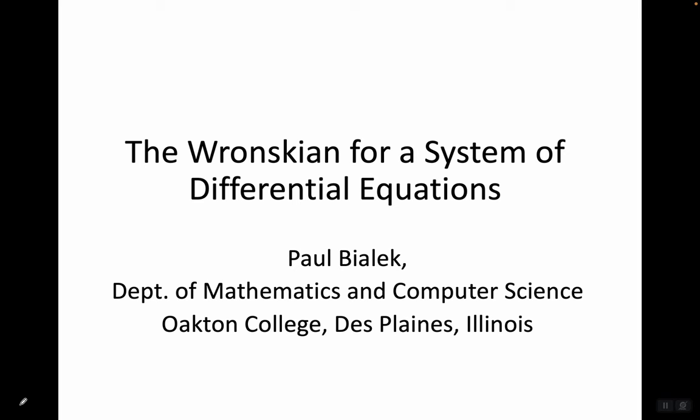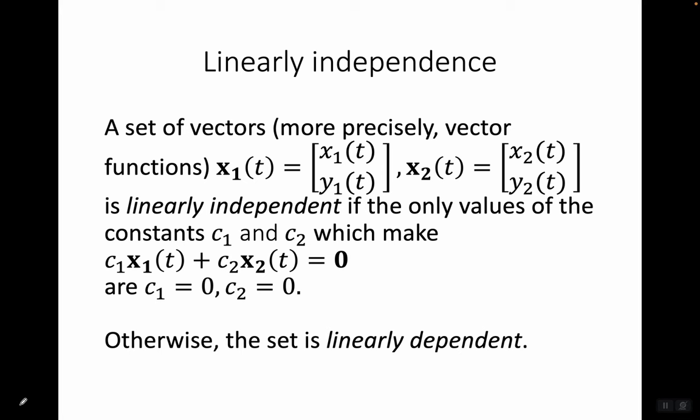Let's talk about the Wronskian for a system of differential equations. A set of vector functions x1(t) = (x1(t), y1(t)) and x2(t) = (x2(t), y2(t)) is linearly independent if the only values of constants c1 and c2 which make c1·x1(t) + c2·x2(t) = 0 are c1 = 0, c2 = 0. Otherwise the set is linearly dependent — in linear algebra, the only solution is the trivial solution.